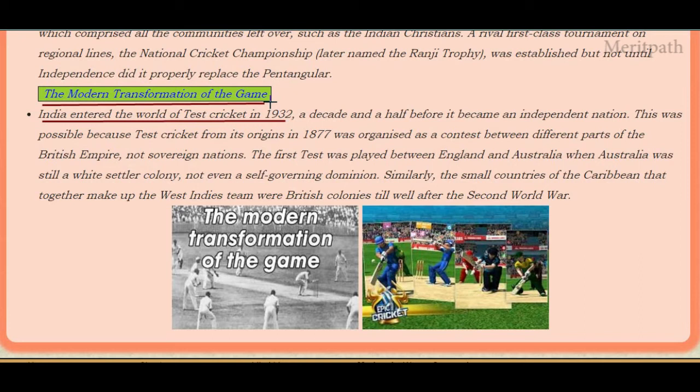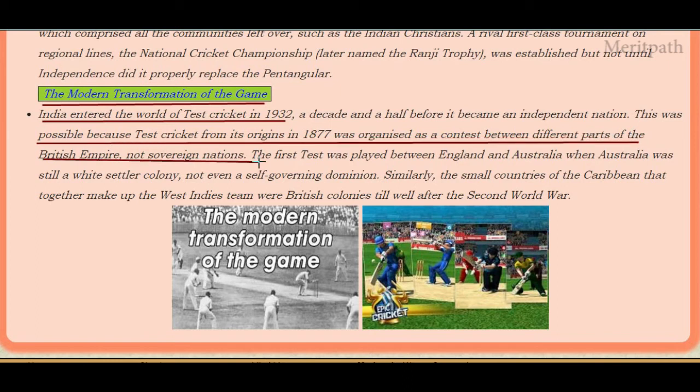India entered the world of test cricket in 1932, a decade and a half before it became an independent nation. This was possible because test cricket, from its origins in 1877, was organized as a contest between different parts of the British Empire and not sovereign nations. The first test was played between England and Australia, where Australia was still a white settlers' colony, not even a self-governing dominion.